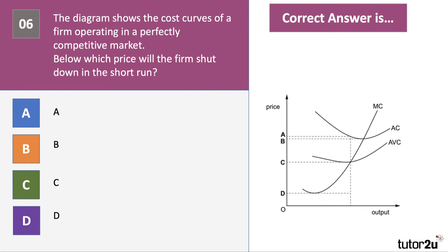Question number six. The diagram shows the cost curves of a firm operating in a perfectly competitive market. Below which price will the firm shut down in the short run? The shutdown point: in the short run, you've got to cover your variable costs. Below price C in the market, the firm will shut down.